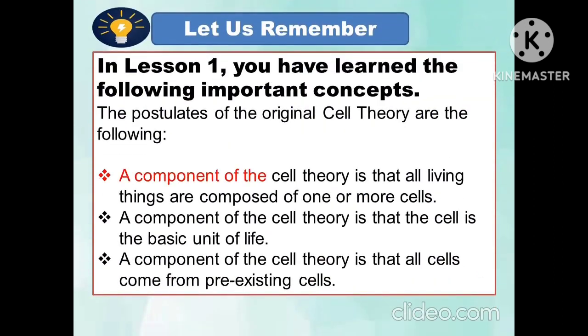In lesson one, you have learned the following important concepts. The postulates of the original cell theory are: first, all living things are composed of one or more cells; second, the cell is the basic unit of life; and third, all cells arise from pre-existing cells.